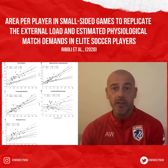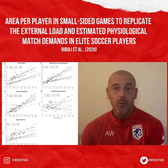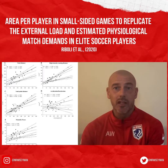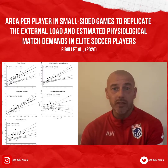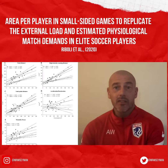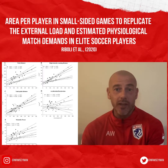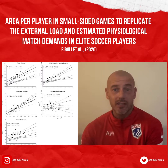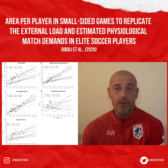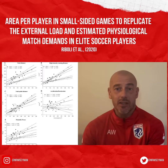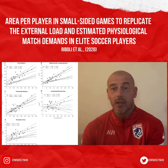It is noted that previous research has suggested an area per player of approximately 311 metres squared was able to replicate the high speed match demands of match play in a game with goalkeepers. The relative play area of an official game is approximately 340 metres squared per player. This may contribute to injury prevention, offering greater protection against non-contact injuries, and leads the authors to suggest that manipulation of the area per player in small sided games to gain the desired external load outcomes may be a good way of managing training loads appropriately.